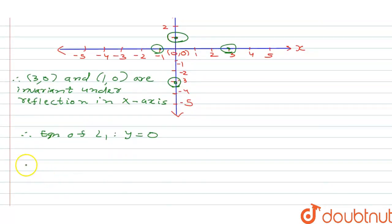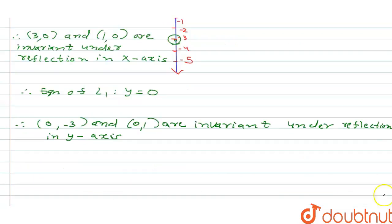So therefore we can write that 0 comma minus 3 and 0 comma 1 are invariant under reflection in y axis. If it is in the reflection of y axis, we can say therefore the equation of L2 is going to be x equal to 0. So this is our answer.